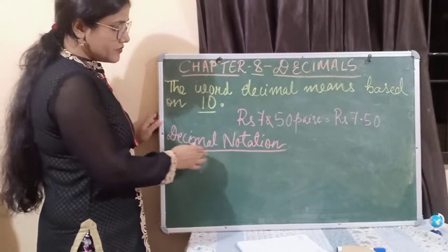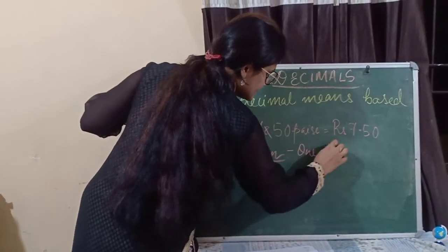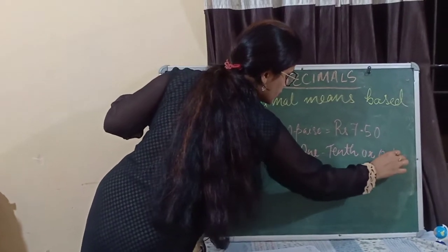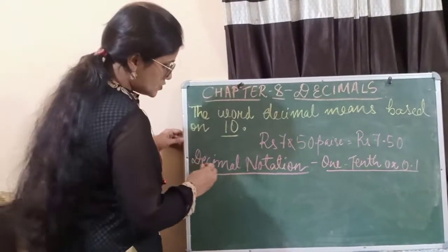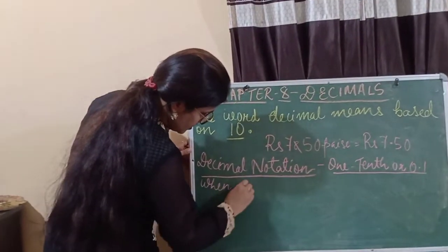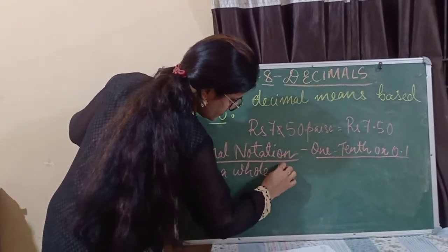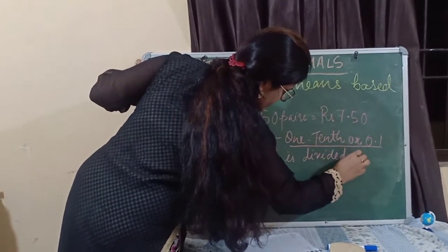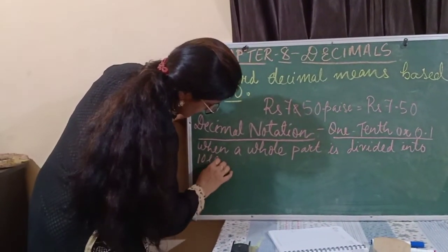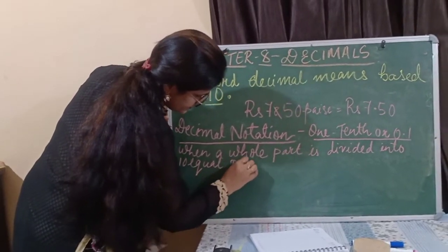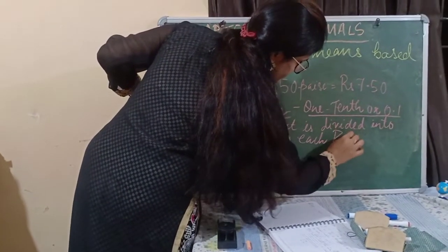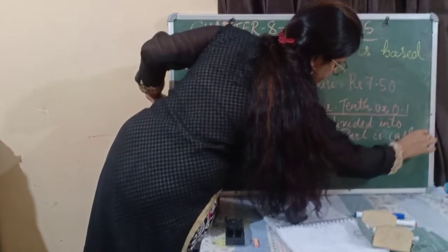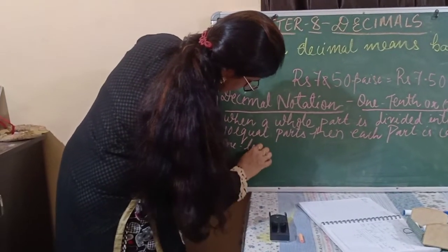In decimal notation, we will learn about 1/10. 1/10 can also be written as 0.1. So when a whole part is divided into 10 equal parts, then each part is called the 1/10 part.